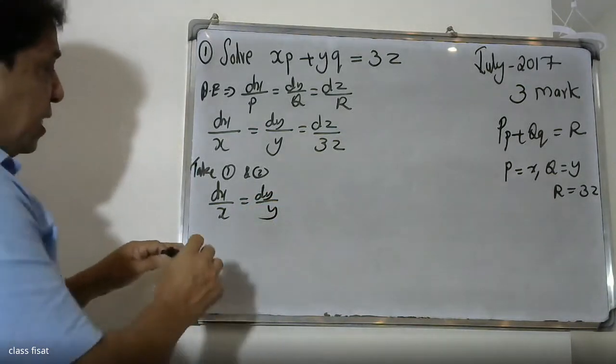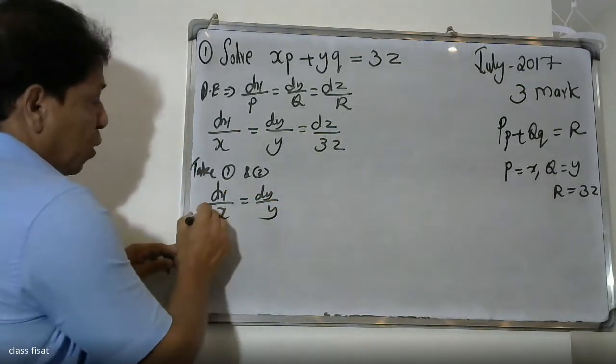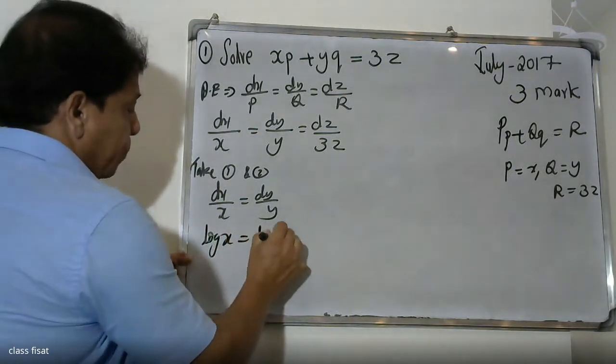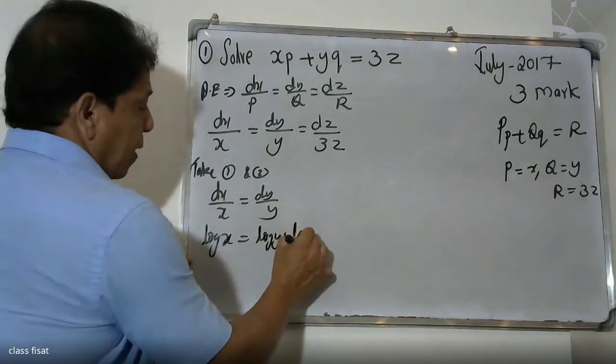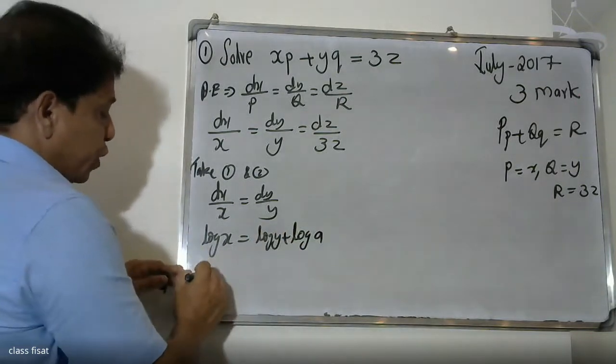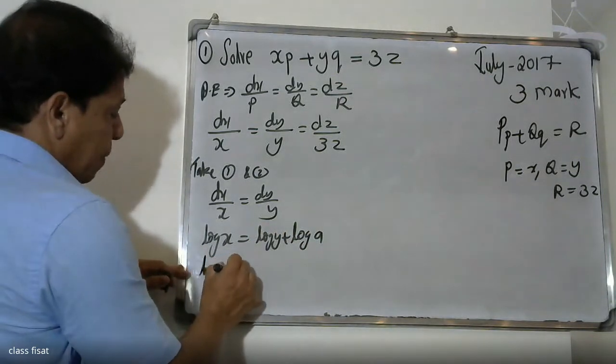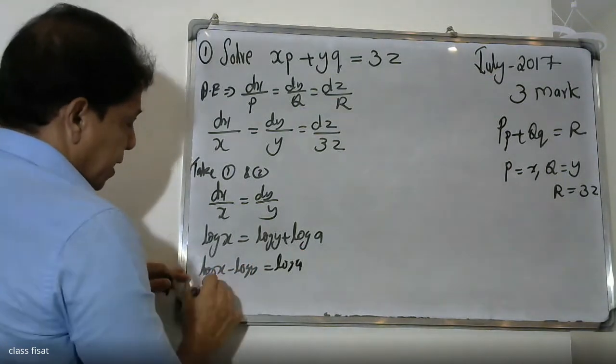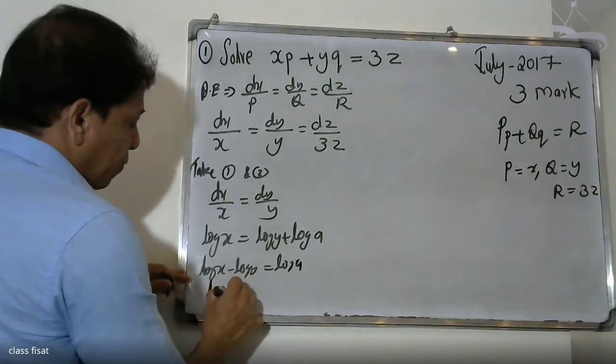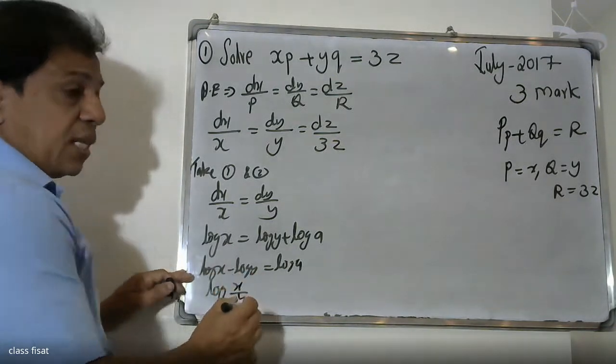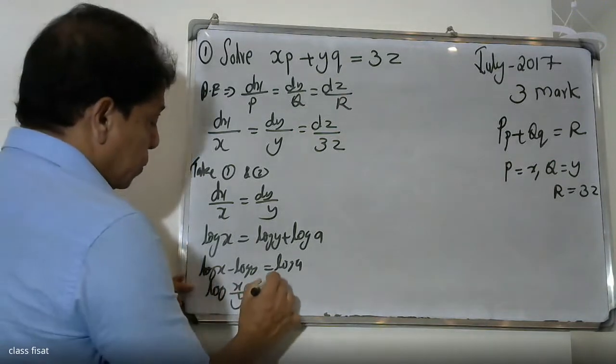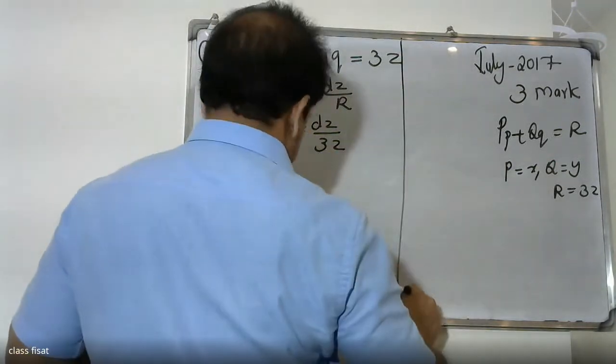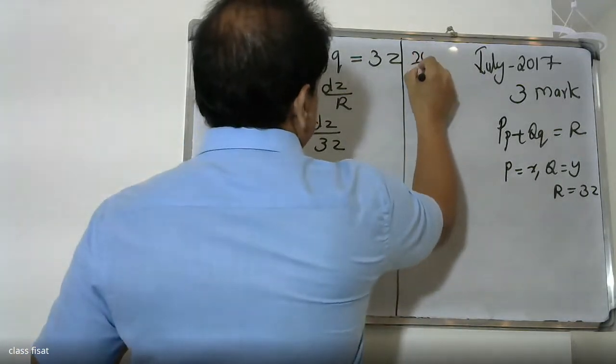This is the integrator. Integrating both sides: log X minus log Y equals log A, that is log X by Y equals log A.